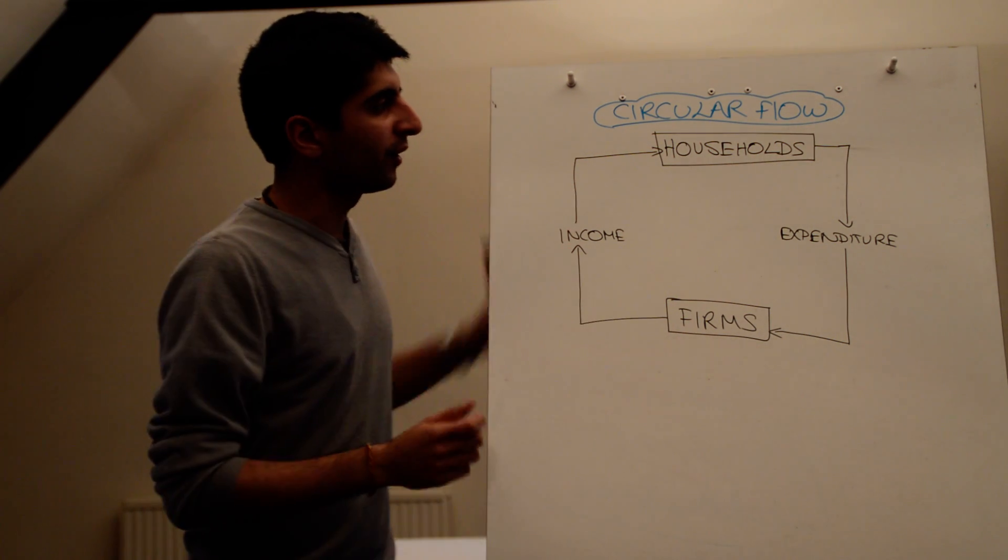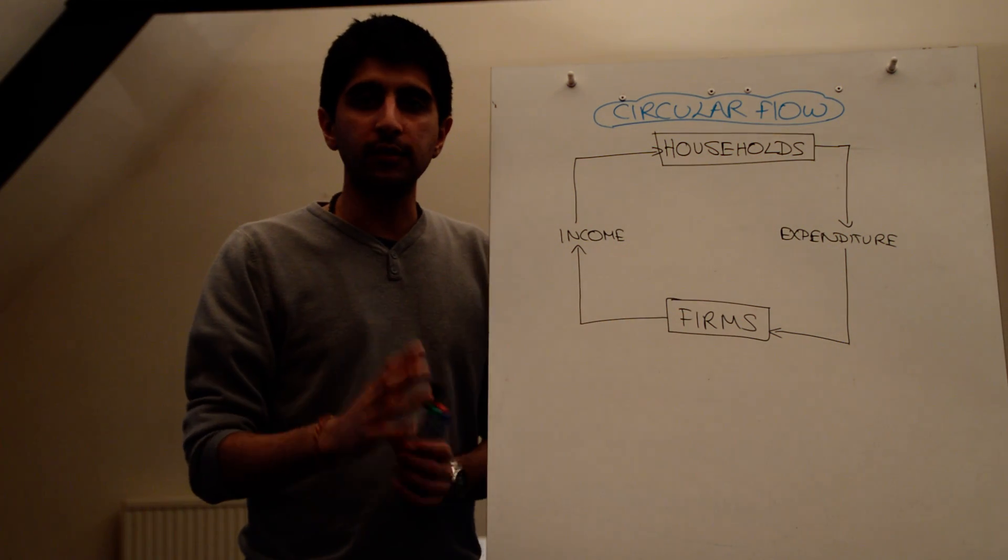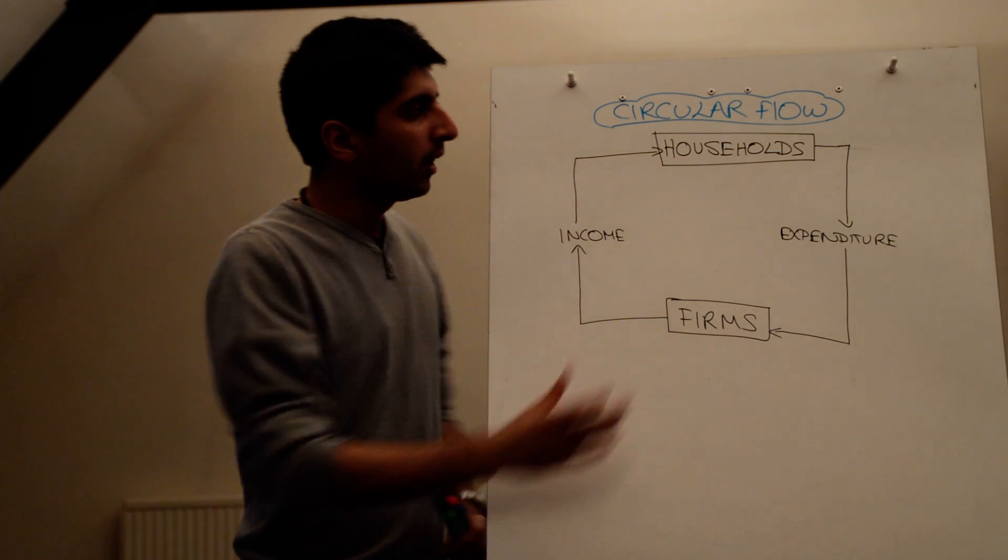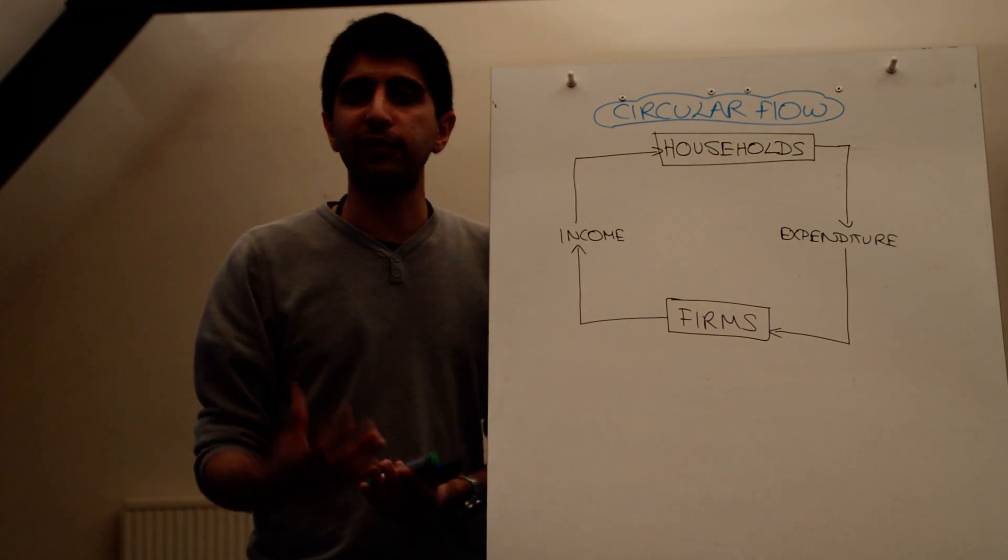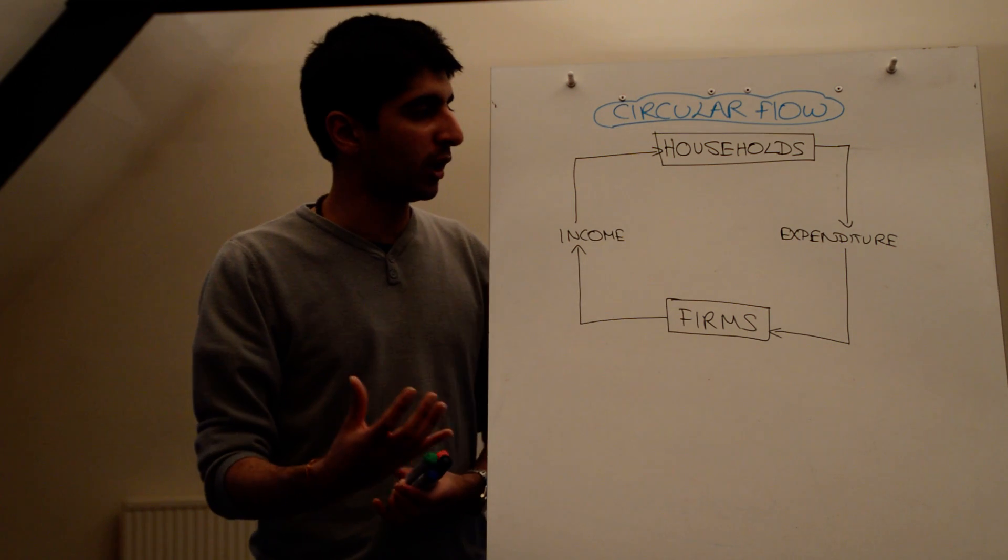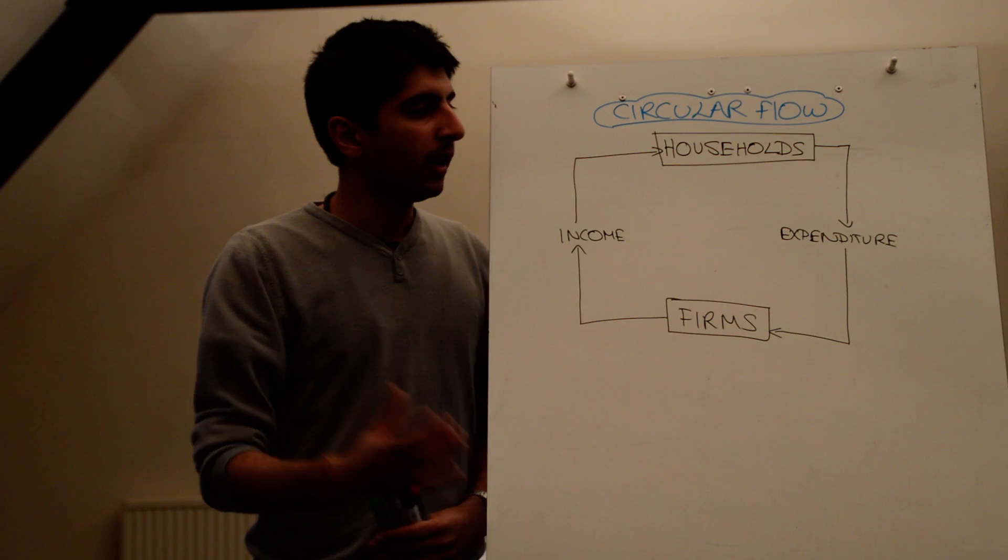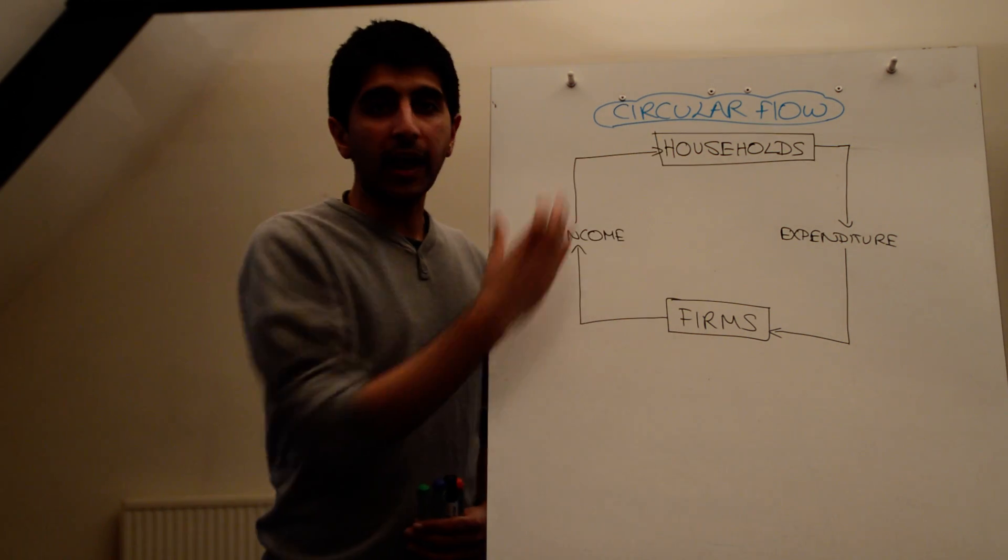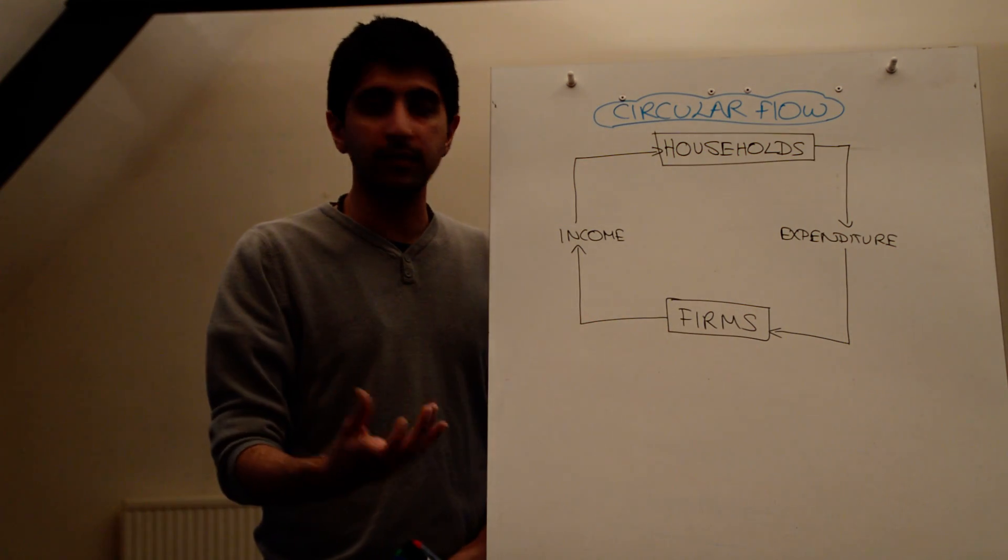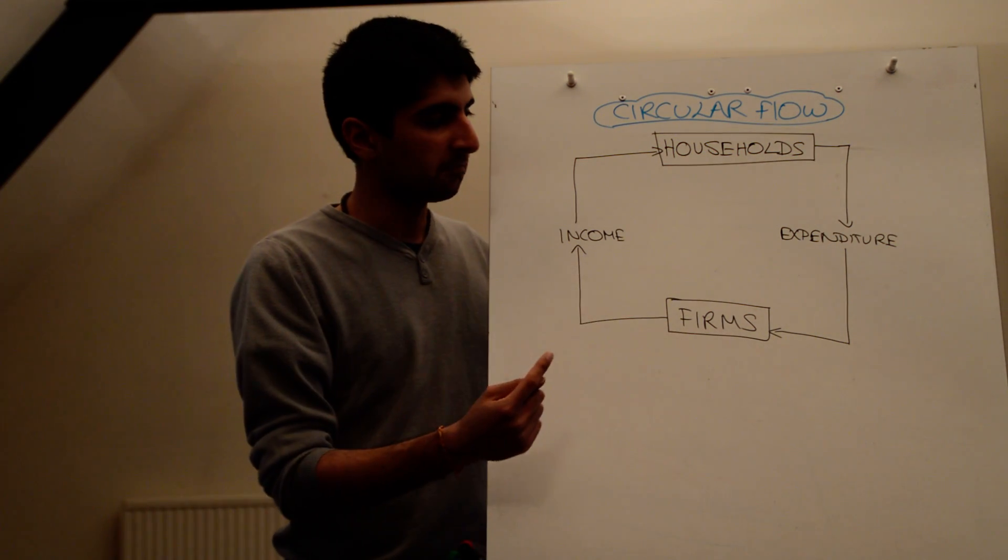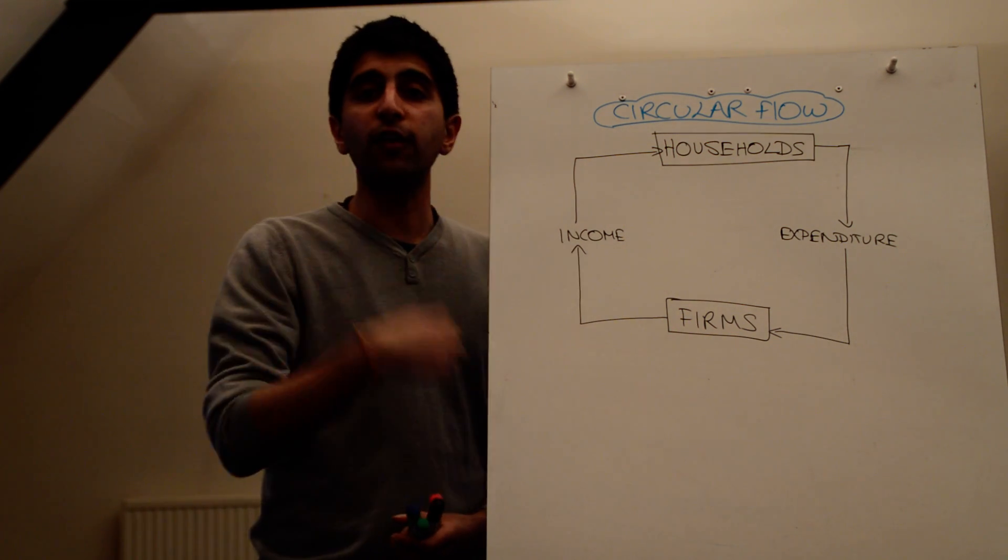Let's start off by looking at households and firms, two economic agents that exist in the economy. Households provide their services to firms in the form of labour and entrepreneurship, and as a result they gain rewards, they gain incomes. The incomes then go to households, and they spend that income on goods and services produced by firms. Well, that's one measure of the circular flow, money flowing around the economy.